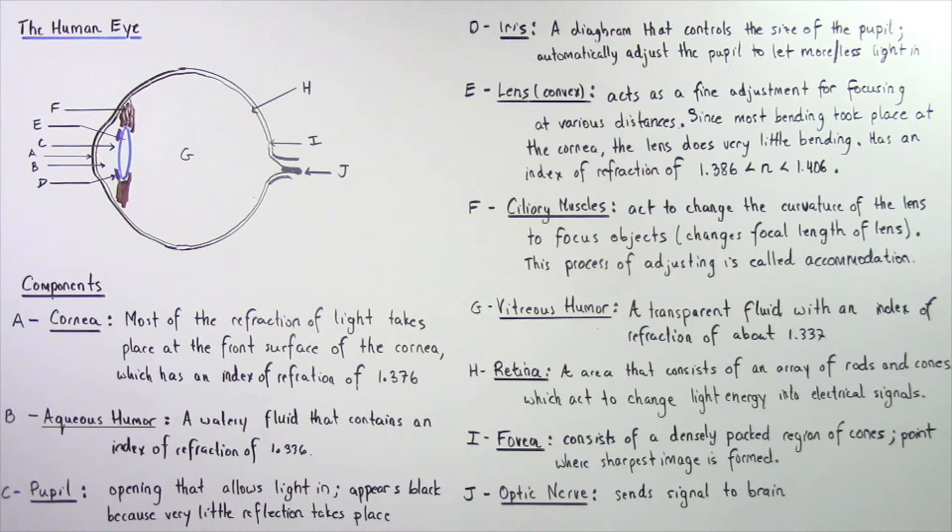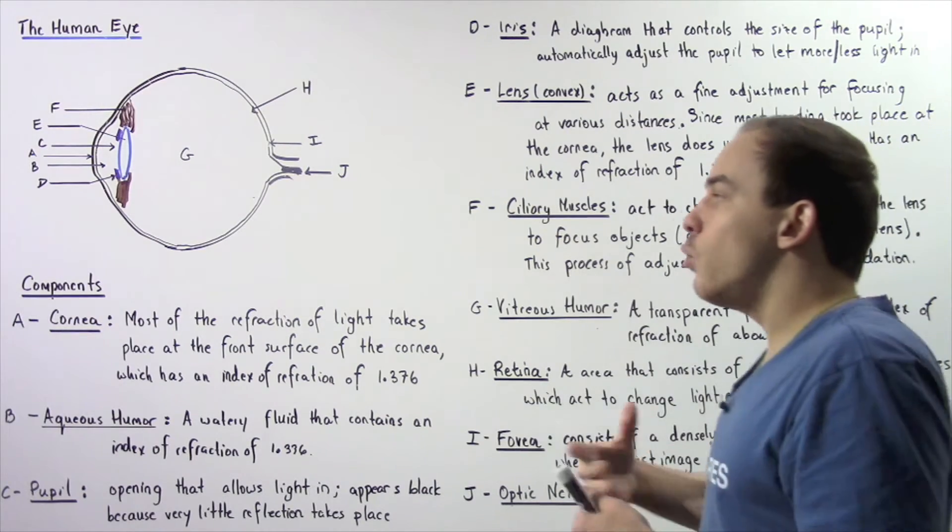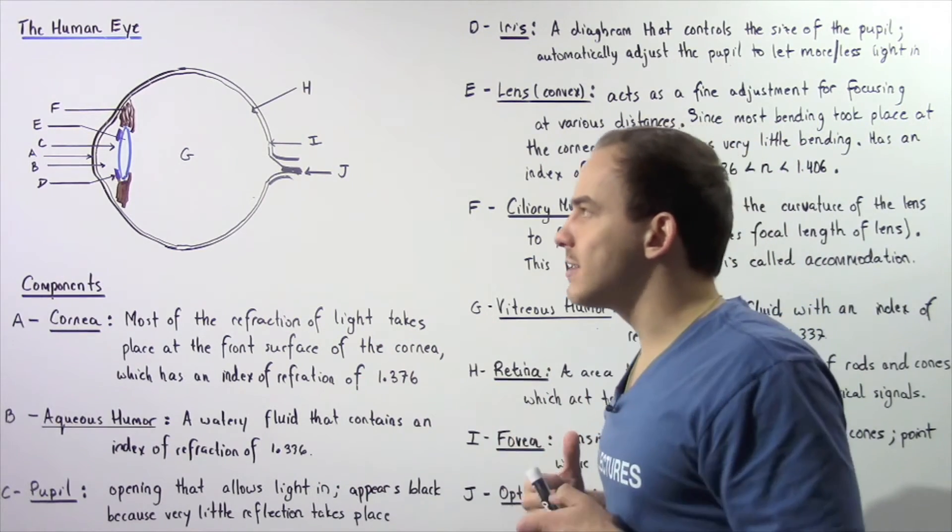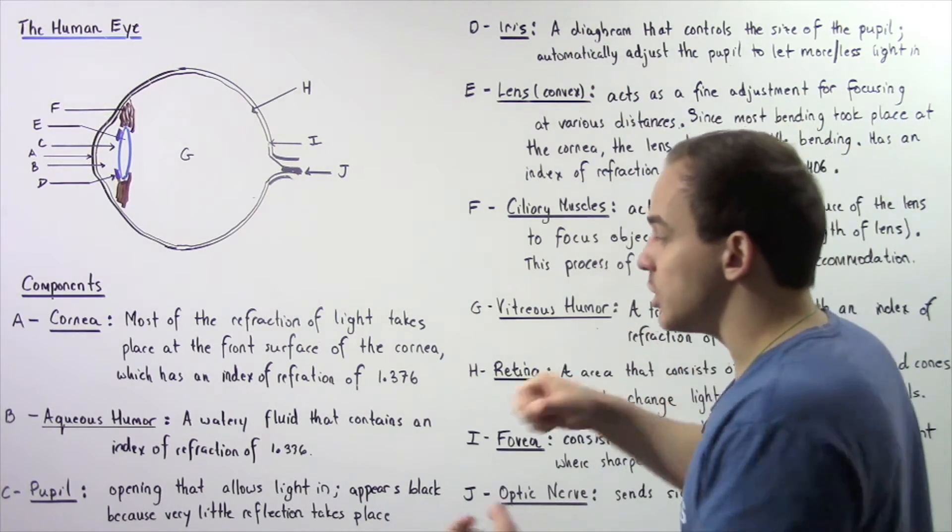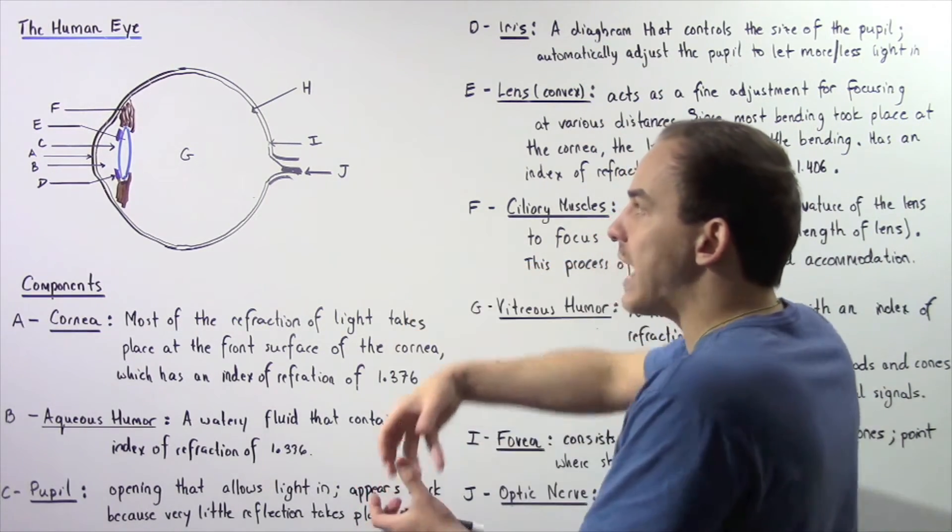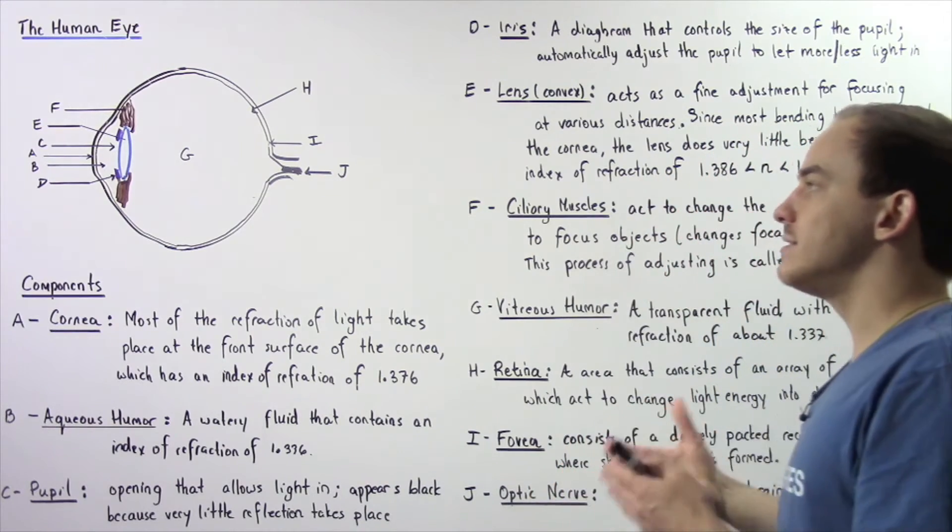The iris is a diaphragm that controls the size of the pupil. It automatically adjusts the pupil to let more or less light in. For example, in the dark, we need a lot of light into the eye. And so, that means the iris will essentially open our pupil so that the size of the opening is larger.